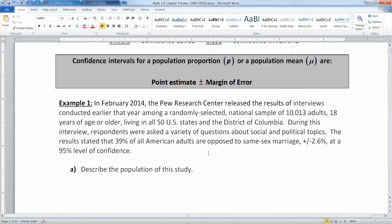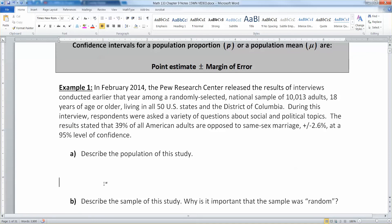So let's look at this. In February of 2014, the Pew Research Center released the results of interviews conducted earlier that year among a randomly selected national sample of 10,013 adults, 18 years of age or older, living in all of the 50 United States and the District of Columbia. During this interview, respondents were asked a variety of questions about social and political topics. The results stated that 39% of all Americans are opposed to same-sex marriage. And then it said in the results plus or minus 2.6% at a 95% level of confidence. So the population, it's a little bit hard to dissect, but it's kind of in here because of the sample. So the sample, let me highlight that for you in yellow. That's your sample.